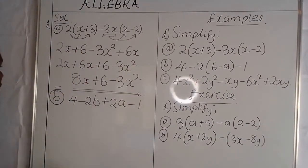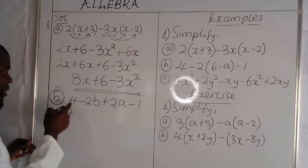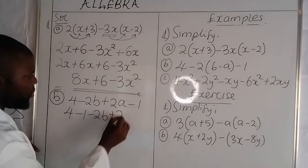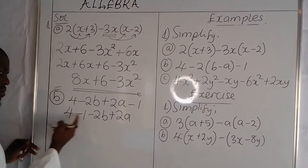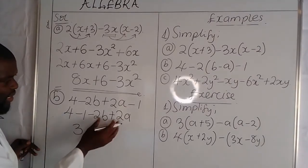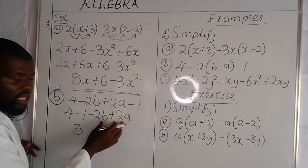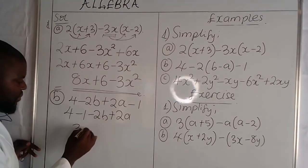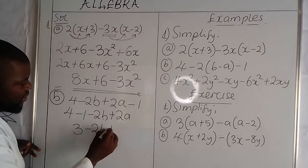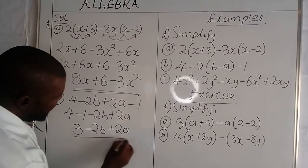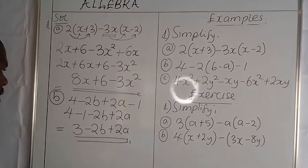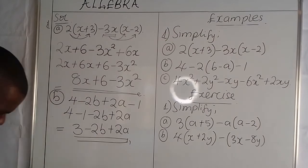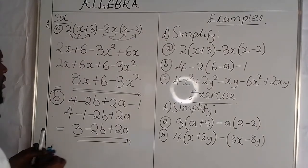Once we reach here, all we need to do is collect numbers. We have a 4 here and a minus 1 there, then we have negative 2B and 2A. So 4 minus 1 is 3, and there is nothing that we can do to these two because their variables are different — this one is B, this one is A. So we just copy them as they are. This is our final answer when simplifying such an expression.